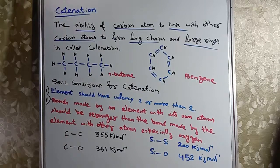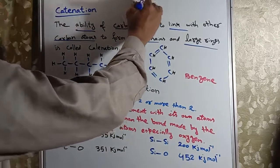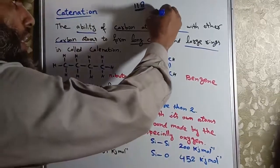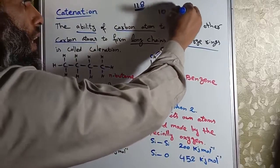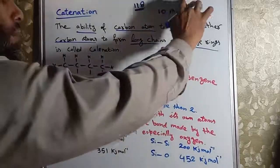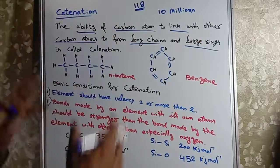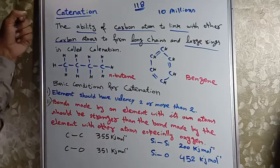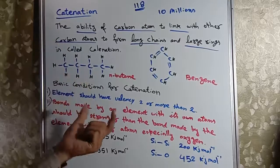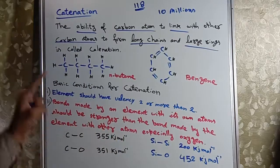This ability of carbon atom to make bonds to form long chains ya large rings - is wajah se duniya mein organic compound ki diversity aur magnitude bahut zyada hai. Total duniya mein 118 elements paaye jaate hain, aur duniya mein organic compound ki tadaad more than ten million hai. Yeh itne zyada kyun hain? Is ke hum reason talaash kar rahe hain aur pehla reason hai catenation.